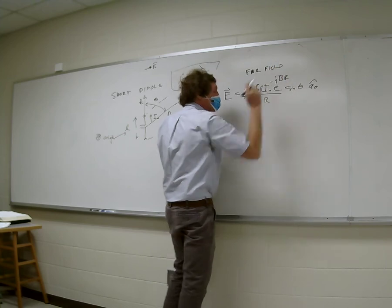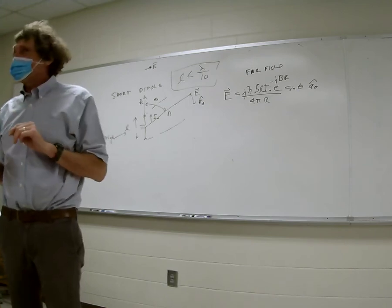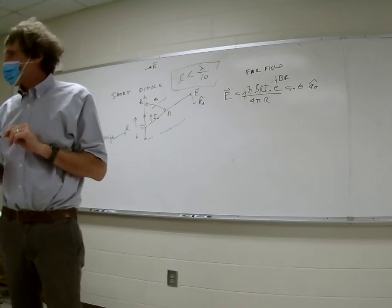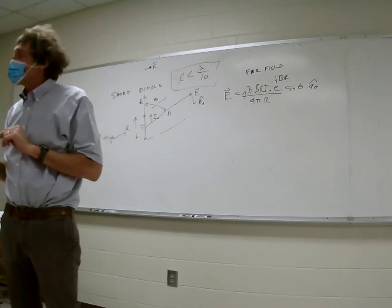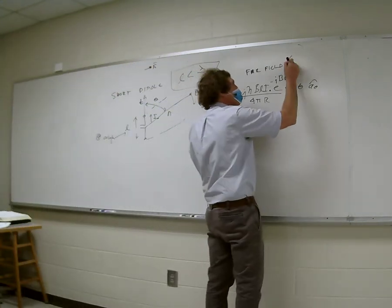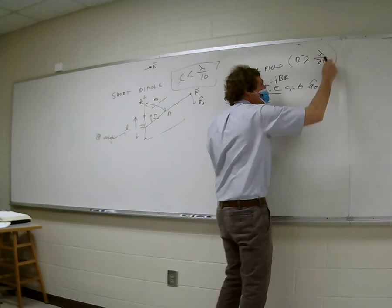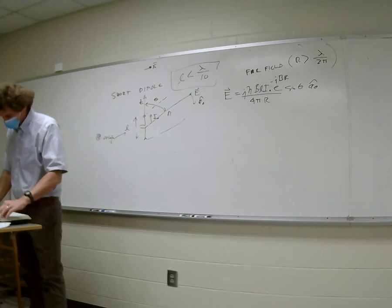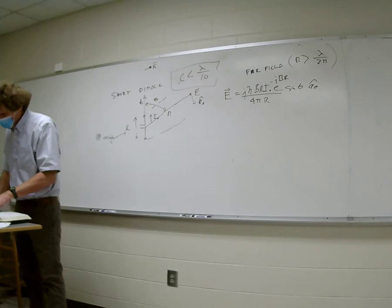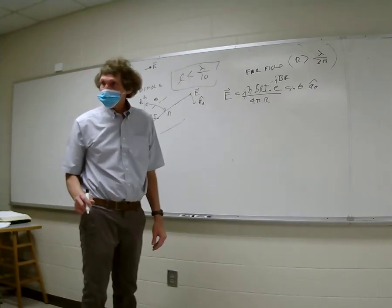Does anybody remember the requirement for the far field? For far field, r has to be greater than λ/(2π). Take a look in your book — it's on page 443, equation 8.48. That's only for dipole or wire antennas.